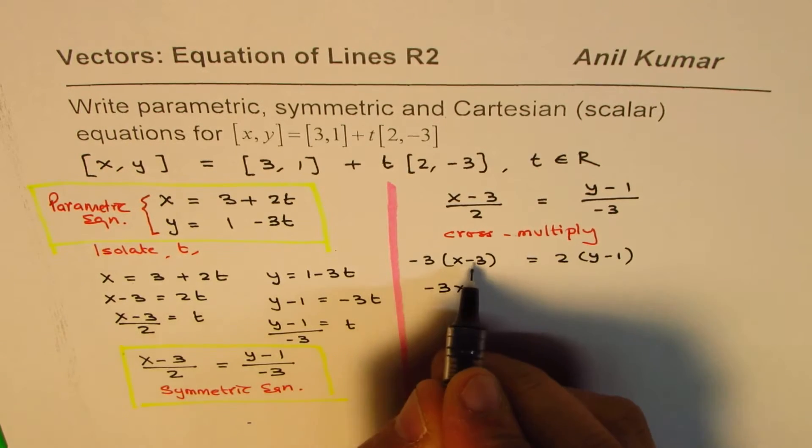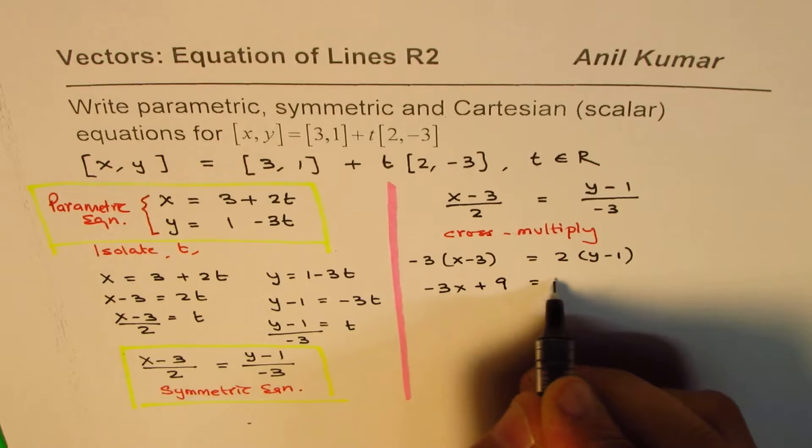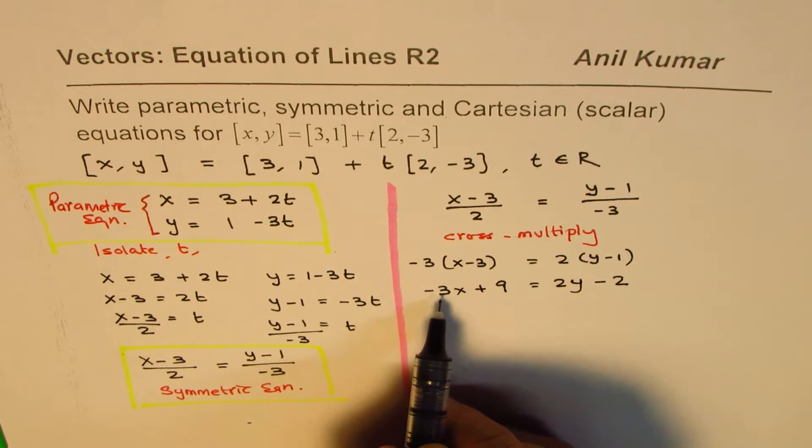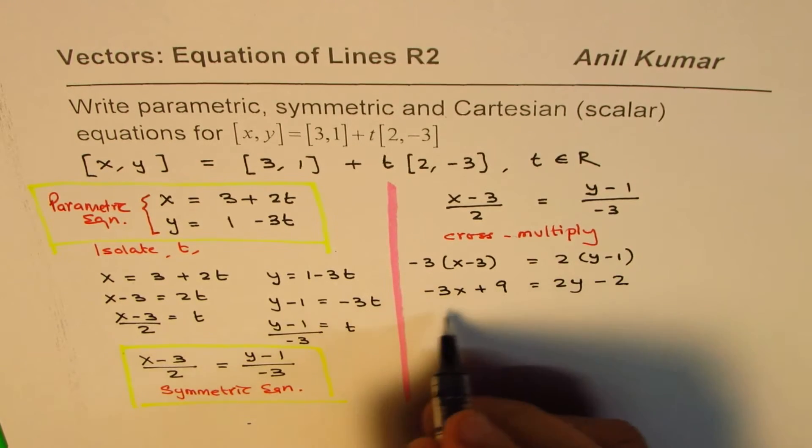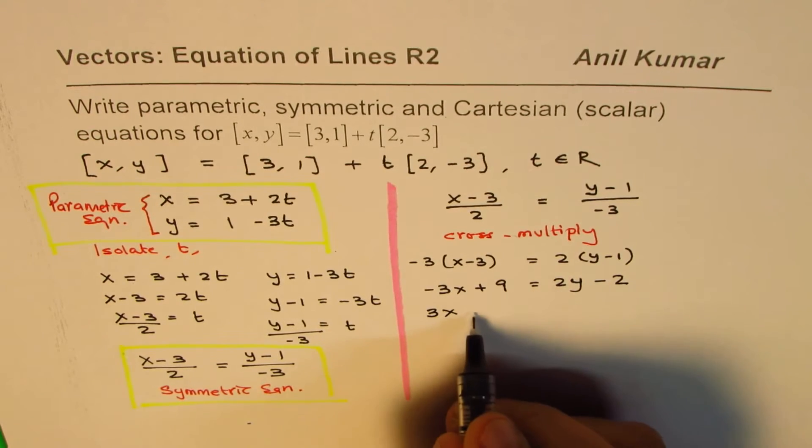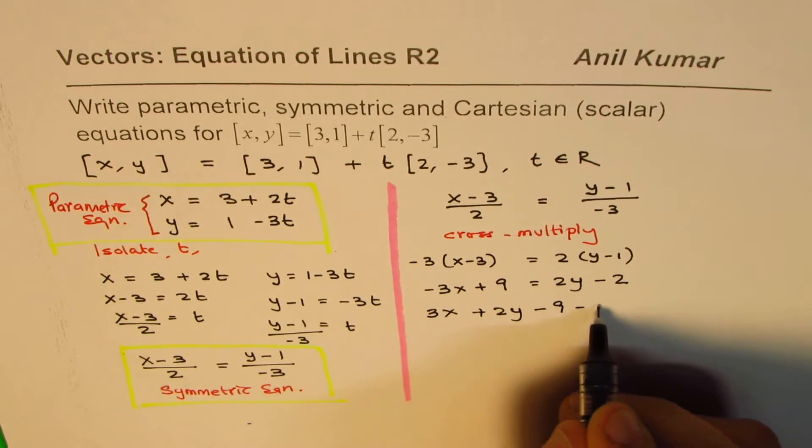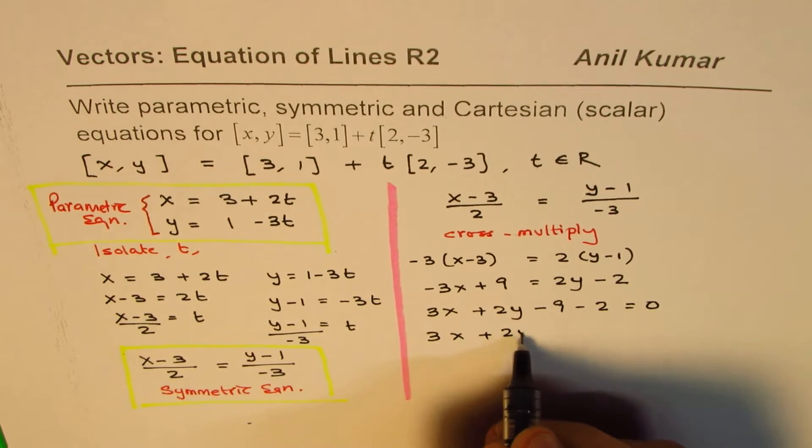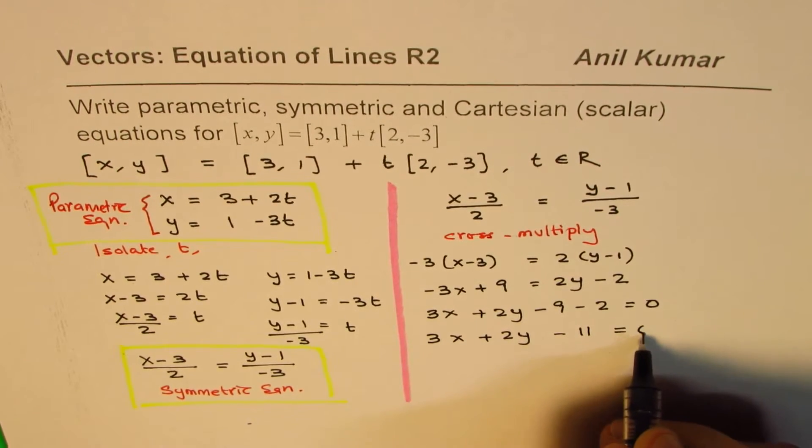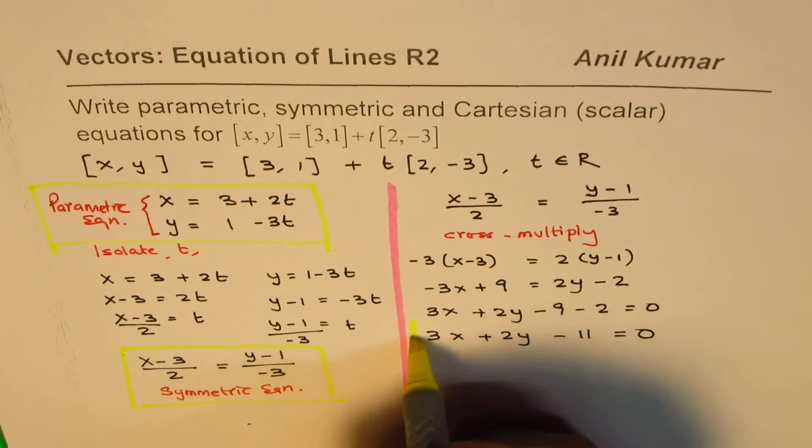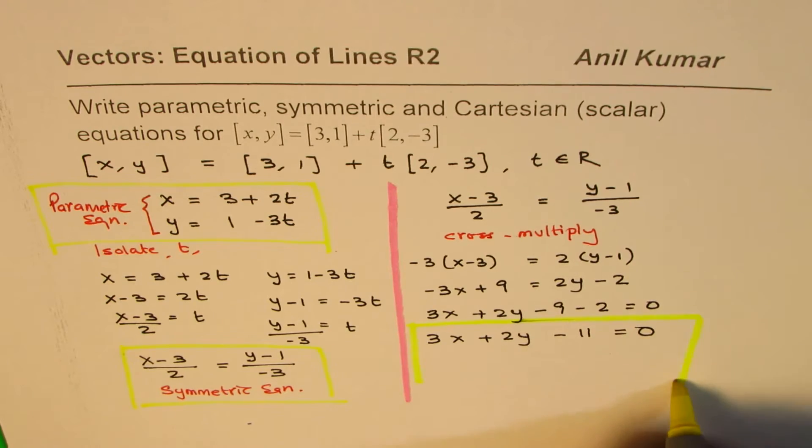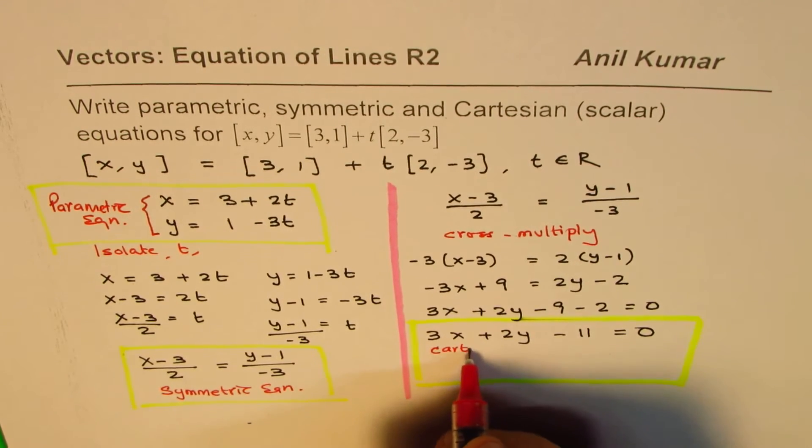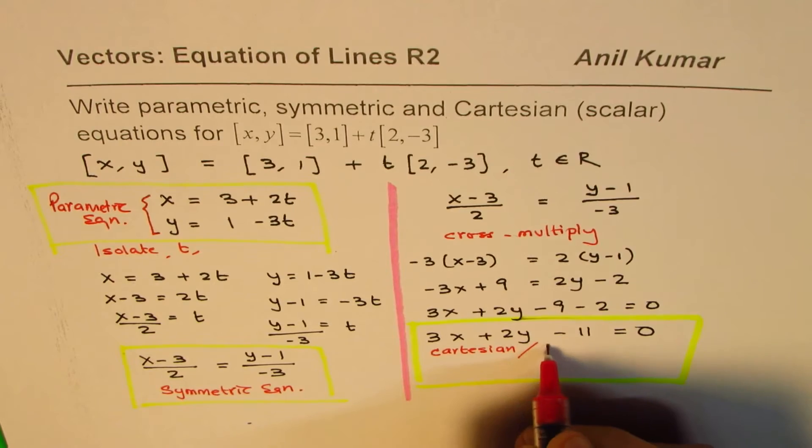So you get -3x and -3 times -3 is plus 9 equals to 2y minus 2. Now it is good practice to keep coefficient of x positive, so I'll take these terms to the right side. So I'll write this as 3x plus 2y minus 9 minus 2 equals to 0. So you can write this as 3x plus 2y minus 11 equals to 0. This form of equation is called the Cartesian or scalar form.